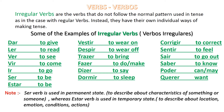Fazer – To do or to make. Dizer – To say. Dormir – To sleep. Corrigir – To correct. Sentir – To feel. Sair – To go out. Saber – To know. Poder – Can or may. Querer – To want.